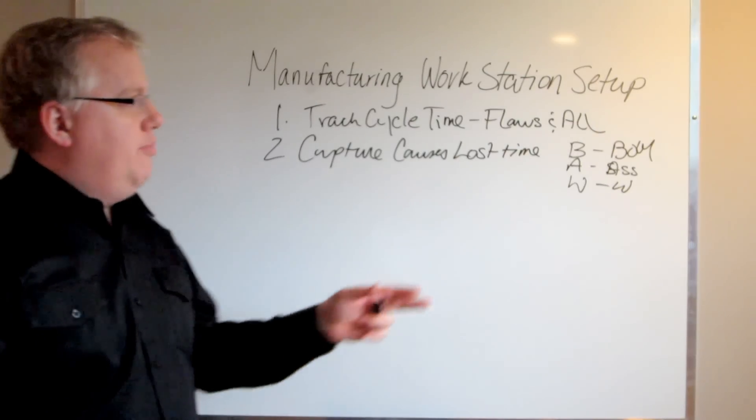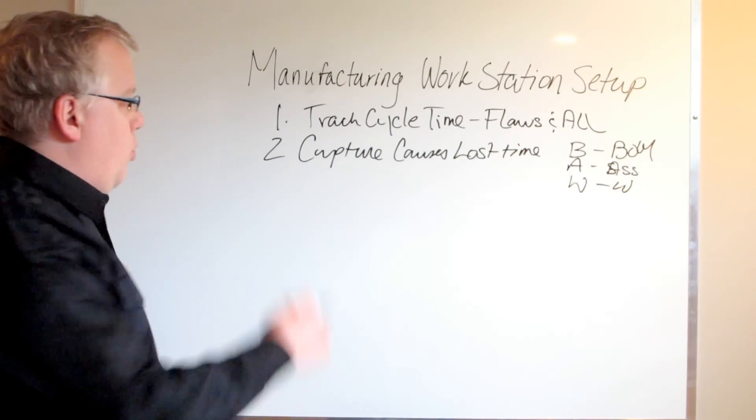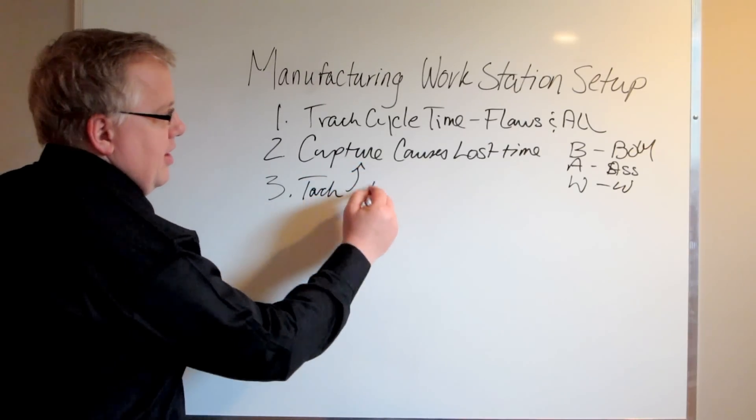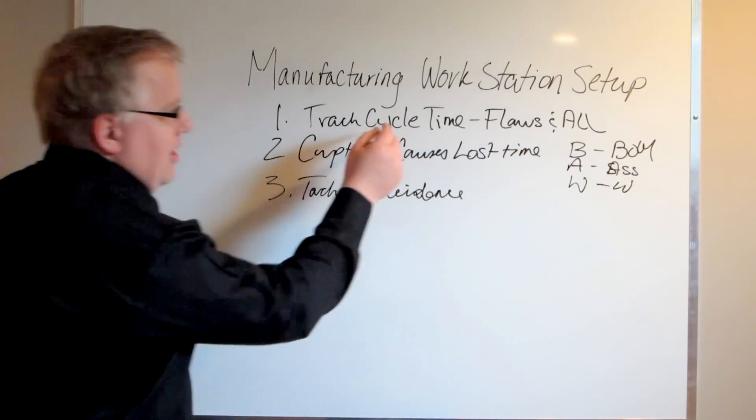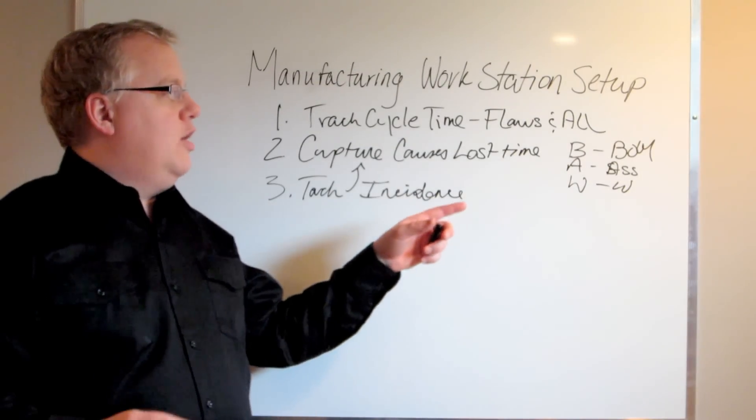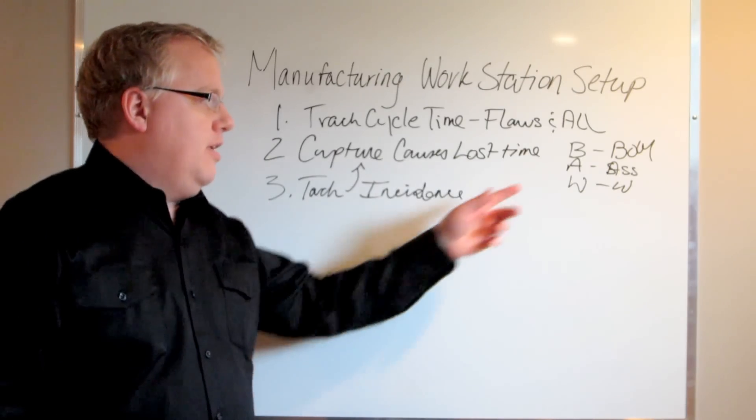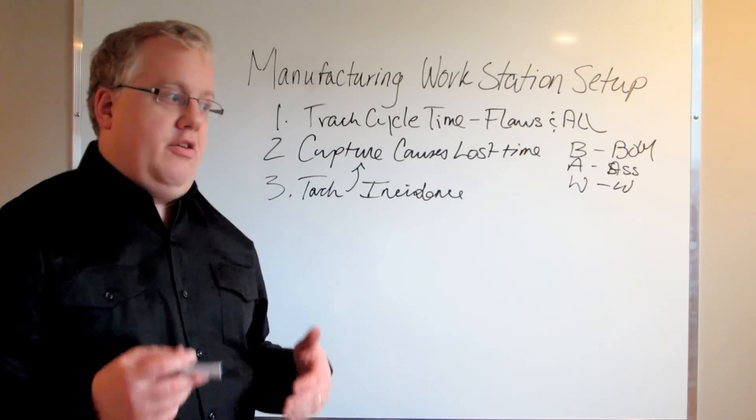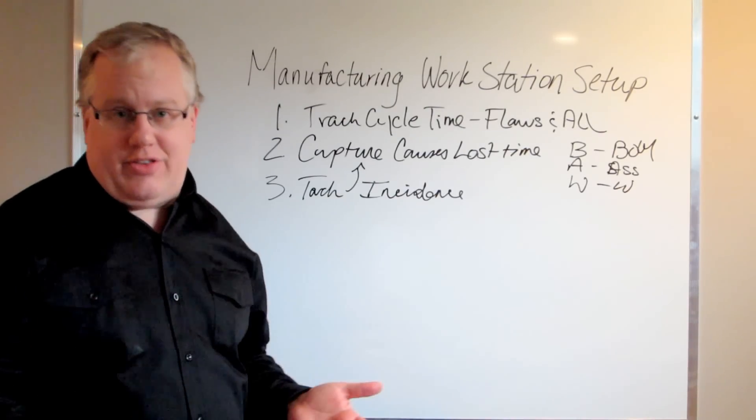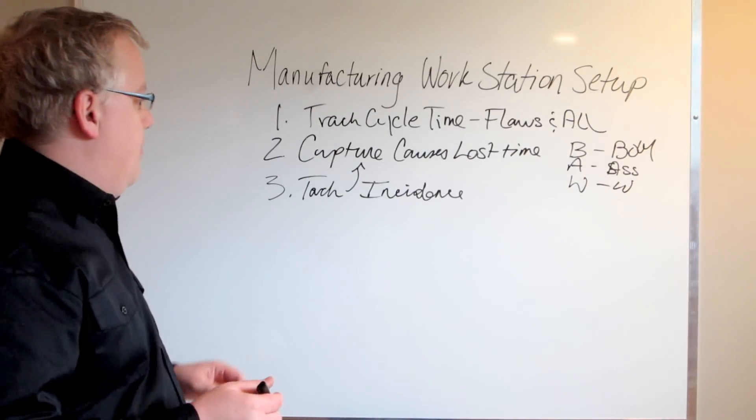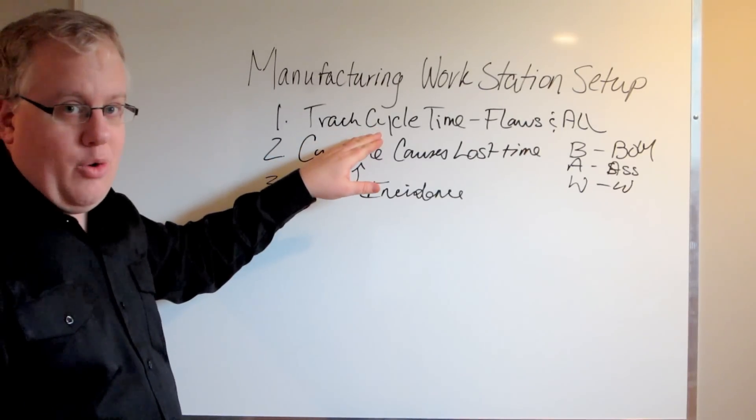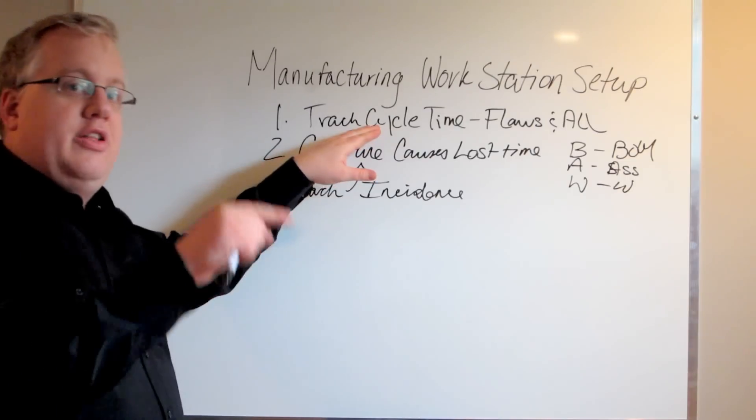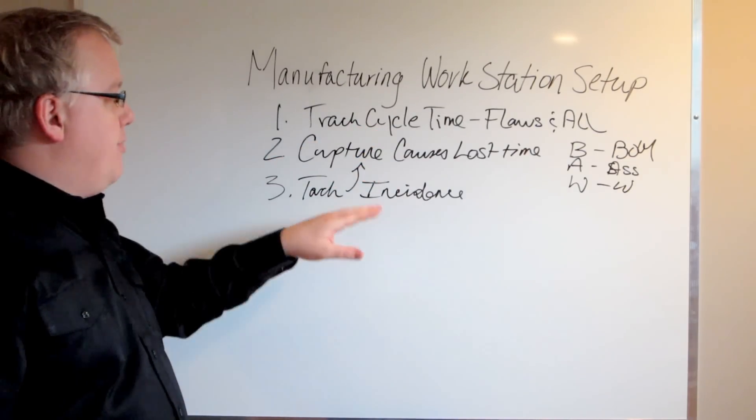The idea is to pinpoint which ones are the most egregious offenders. While you're doing that, you also want to track the incidence of these lost times. As you're taking these cycle times, you're going to come to understand which one caused the most lost time. You'll be tracking bill of materials, assembly drawings, and work orders, putting a little check beside each time it happens. Gradually over time, you'll start to see what's causing the lost time in manufacturing and what's causing these high cycle times. First one is track the high cycle times, flaws and all. Don't worry about what you're capturing, just track those cycle times one after another.